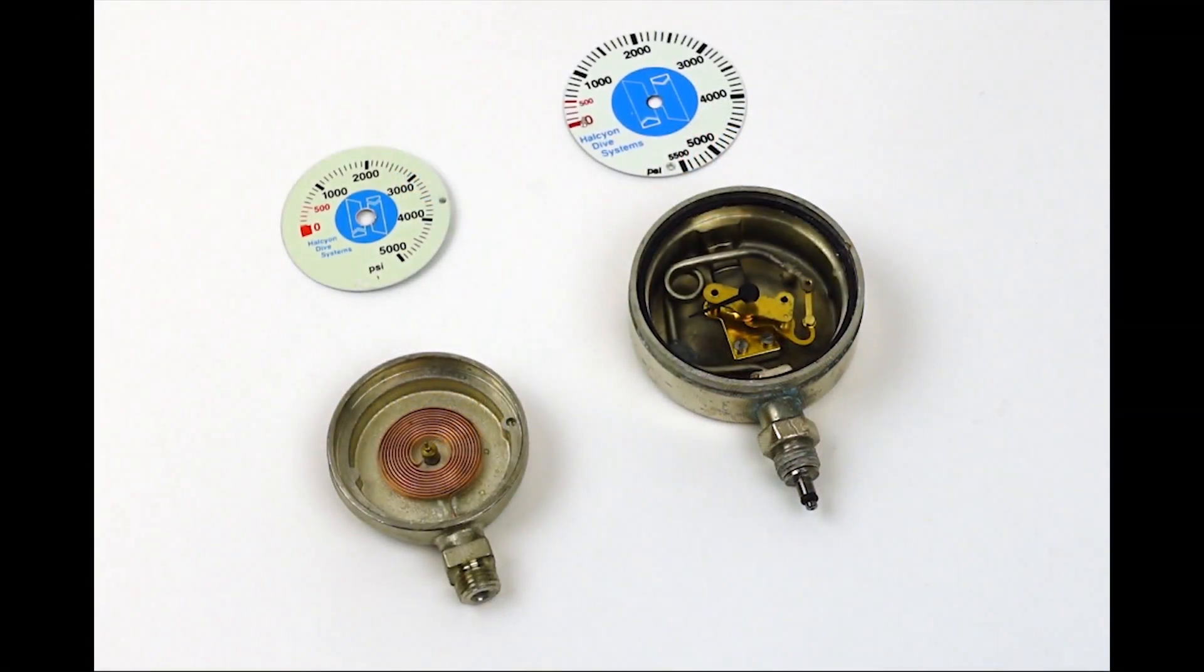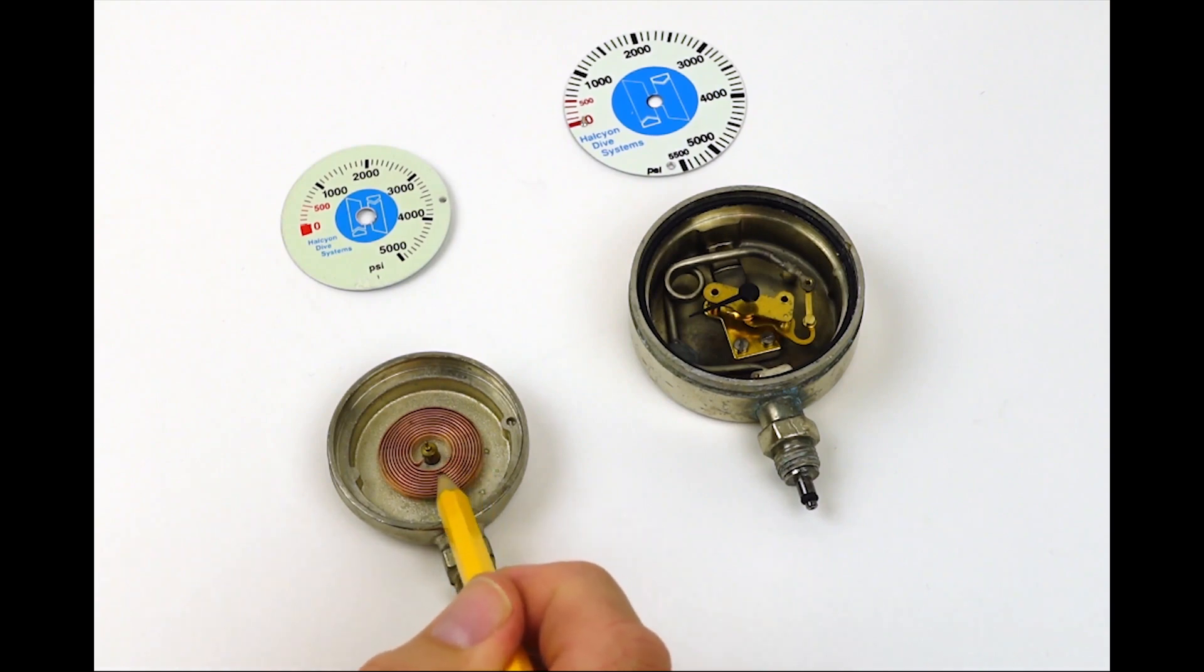Let's take a look at the guts of the Halcyon SPGs. The Halcyon stage SPG has a spiral wound tube that when the gas is turned on, it pressurizes the tube and the tube attempts to expand.